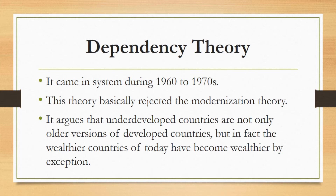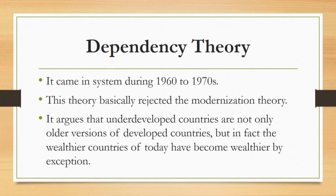These rich countries counter all the attempts made by dependent nations to resist their influences by means of economic sanctions. Whenever these poor countries try to come into competition or try to get some power, the developed countries become a hurdle for them promptly. We can take the example of Iran — Iran worked on its nuclear program and faced sanctions from the United States and other big powers, because these developed countries don't want to see underdeveloped countries become developed states.